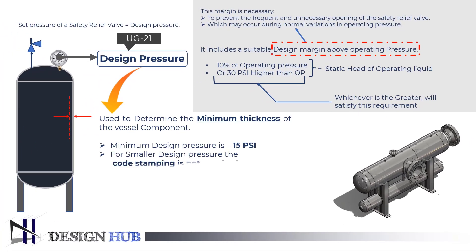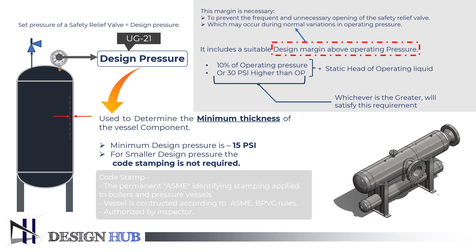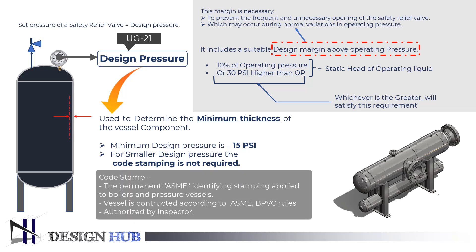Generally, code stamping is not required if we get a smaller design pressure. Code stamp means the permanent ASME identifying stamping applied to boilers and pressure vessels, which indicates that the vessel has been constructed following the rules of the applicable section of the ASME BPVC and has been approved by an authorized inspector.